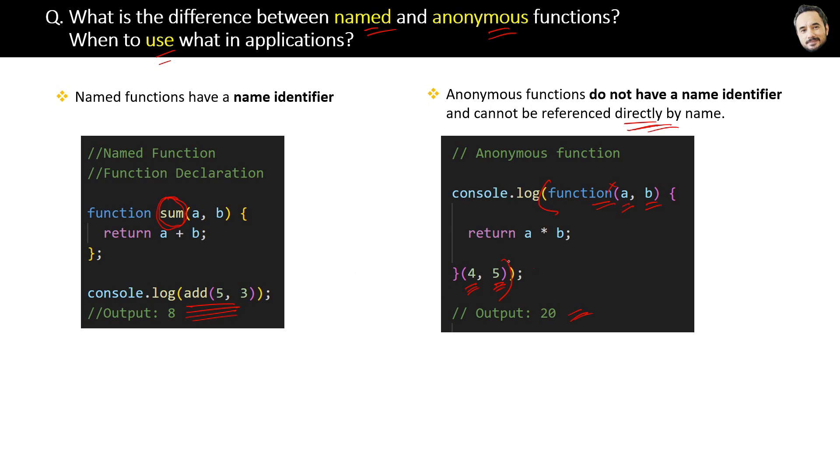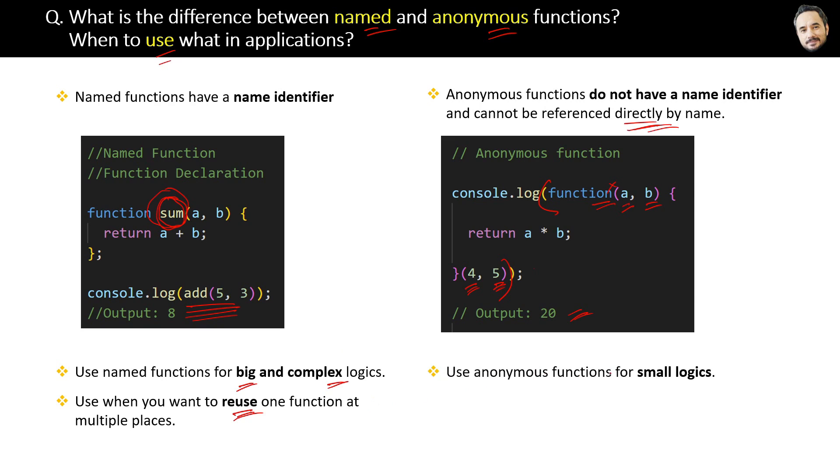Now the question is when to use what in our applications. The answer is: use named functions for big and complex logics, or use it when you want to reuse one function at multiple places. On the other hand, use anonymous functions for small and simple logic. Use it when you want to use a function at a single place only. So that is the difference and that is the purpose of the named and the anonymous functions.